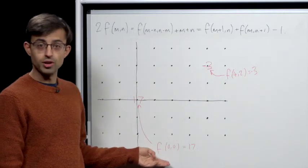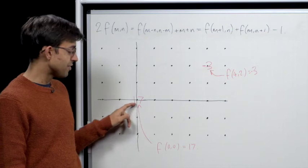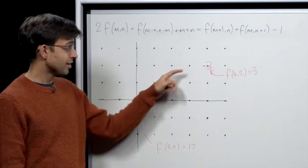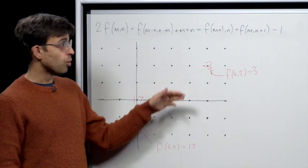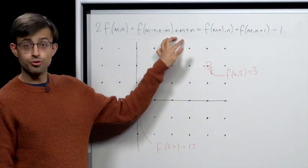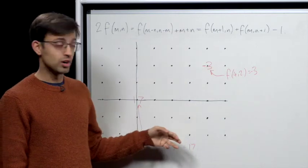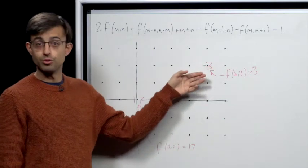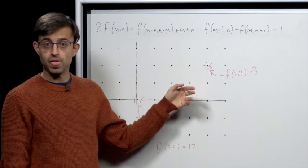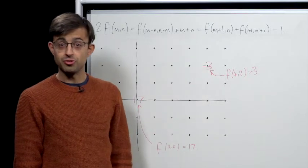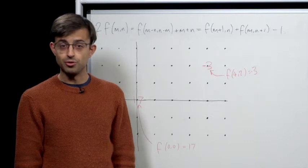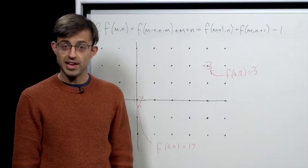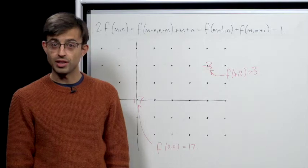So in this example I've drawn two values: f(0,0) is 17 here and f(4,2) is minus 3. So what we're going to try and do is use the triple equality to find some relationships between the values of the function. Now one way we can do this is by substituting in some small values of m and n, and the simplest possible values are m equals 0 and n equals 0. So let's start by doing that.